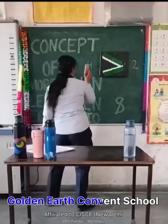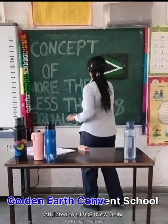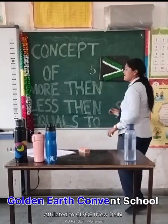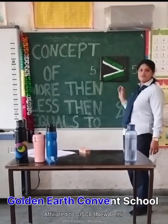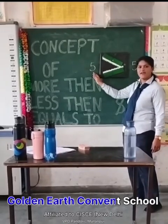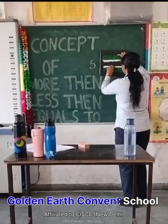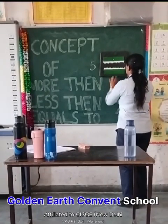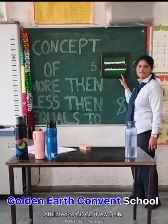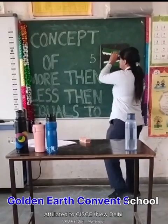I will give you one more example. Here I have number five, and here also I have number five. These two numbers are equal — same numbers, five and five. This is the sign of equals to, and this sign represents that the numbers are the same.